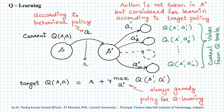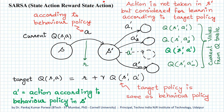In SARSA, the target policy is the same as the behavior policy. So to calculate the target action value, the SARSA agent will use an action according to the behavior policy, because the target policy is the same as the behavior policy. The target Q-value for SARSA learning will be R + γ · Q(S', A'), where action A' is selected according to the behavior policy.